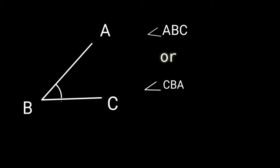When two lines join at the same point, angles are formed. Here you can see one angle, angle ABC, or we can say in another way, angle CBA.